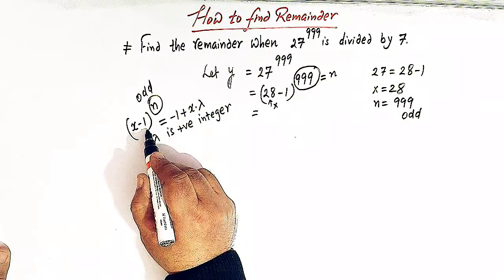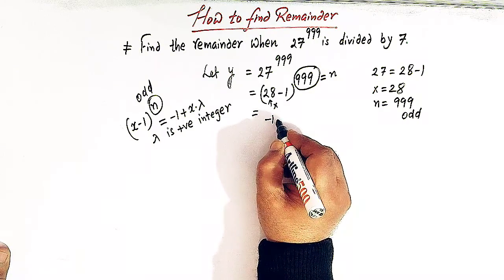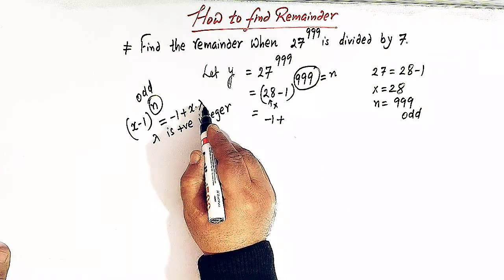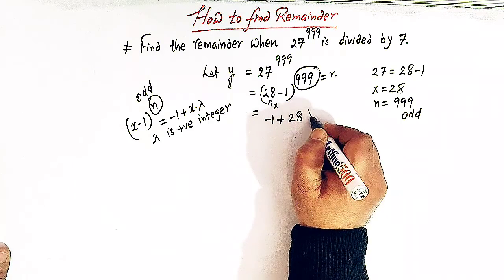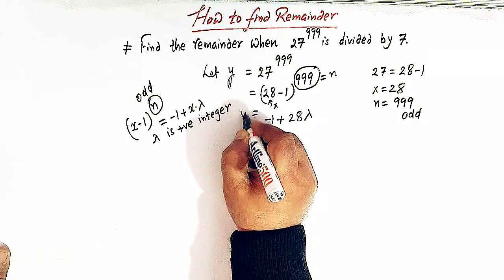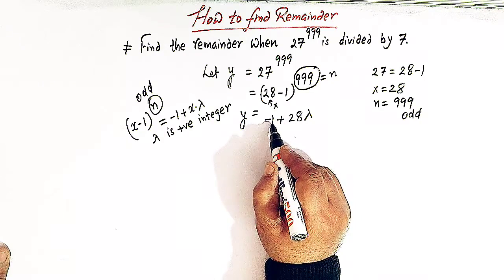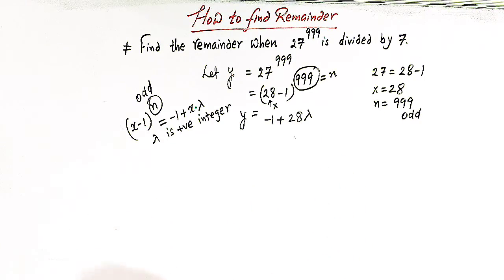We can use this result. We have minus 1 plus x times lambda, x is 28. So we have 28 times lambda. So y is equal to minus 1 plus 28 times lambda.